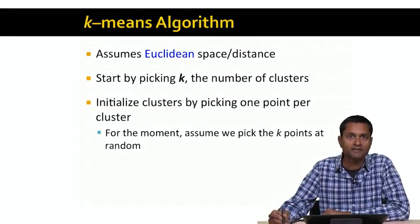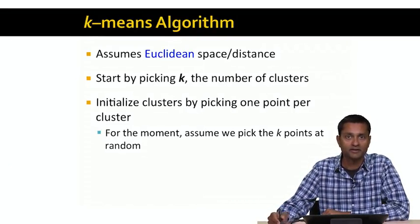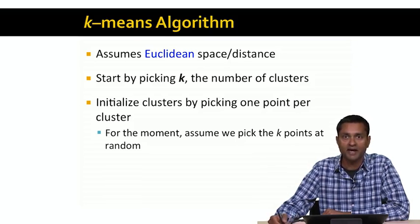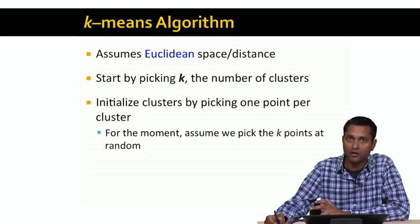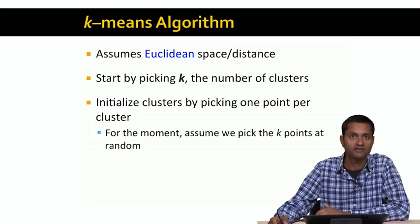The k-means algorithm assumes a Euclidean space and a Euclidean distance. The first step is to pick k, the number of clusters. For now, let's just assume that we pick a number k and say that's the number of clusters we finally want. Towards the end, I'll show you how to actually pick this value k. For now, let's just assume that k is a given.